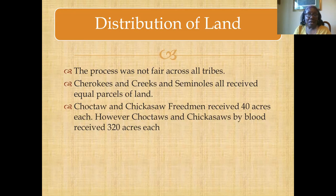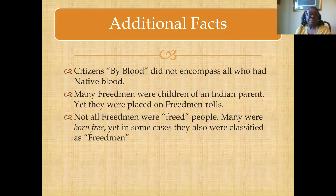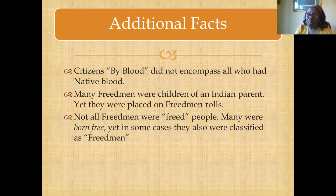Stated another way, Choctaws and Chickasaws by blood were given eight times the opportunity to create, establish, and maintain generational prosperity. The odds were stacked against many of the Freedmen. Also, the categories themselves — those classified as citizens by blood — did not incorporate everyone who had Indian blood. There were many Freedmen who had a parent of native ancestry, yet they were placed on the Freedmen roll. Not all Freedmen were freed people; many of them had been born free, had never been enslaved, yet they were classified as Freedmen because they had African ancestry.